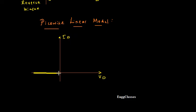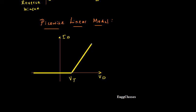In reverse bias I don't get any current, and till Vt the current is zero. This point is the knee voltage Vt or Vk. After this point the diode starts conducting and I draw another straight line. This is the piecewise linear model — the actual VI characteristics are approximated with two pieces of straight line: the first piece and the second piece.